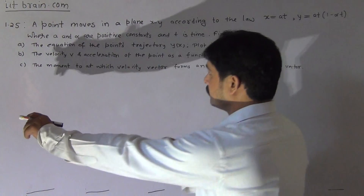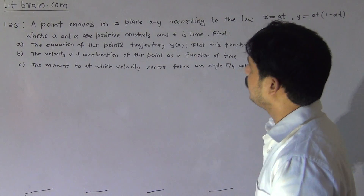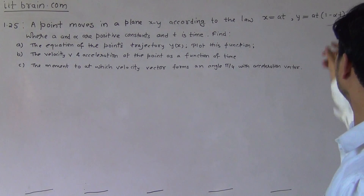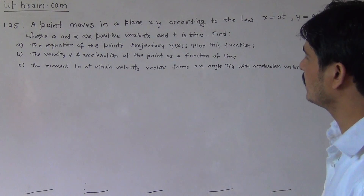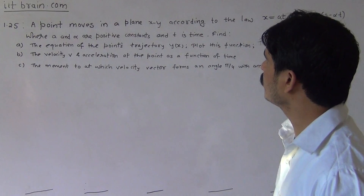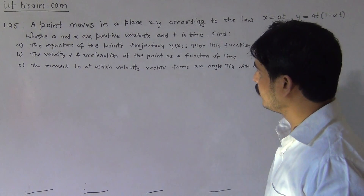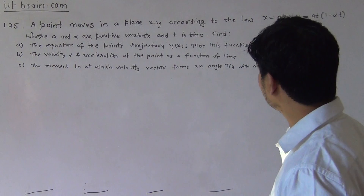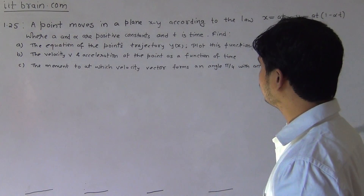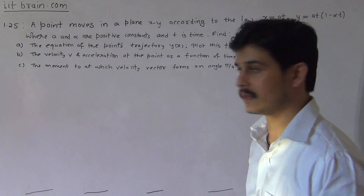Hello students, this is problem 1.25. A point moves in the plane xy according to the law x equal to at, y equal to at(1 minus alpha t), where a and alpha are positive constants and t is time. Find the equation of the point's trajectory y(x) and plot this function. Second part: find the velocity and acceleration of the point as a function of time. And the final part: find the moment t₀ at which the velocity vector forms an angle pi by 4 with the acceleration vector.